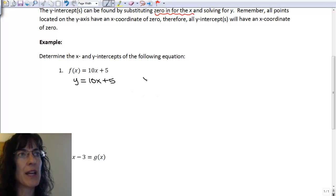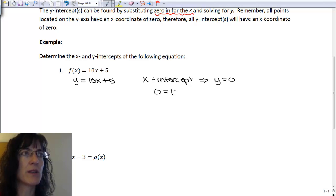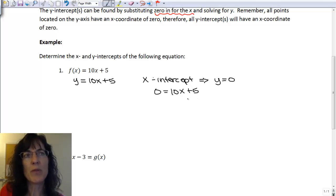And then to find the x-intercept, remember I'm going to let the y equal 0. So to do that, I'll have 0 equals 10x plus 5. And then I want to solve for the x. So first thing I want to do is move the 5 to the other side. It's being added, so I'm going to subtract 5 on both sides.